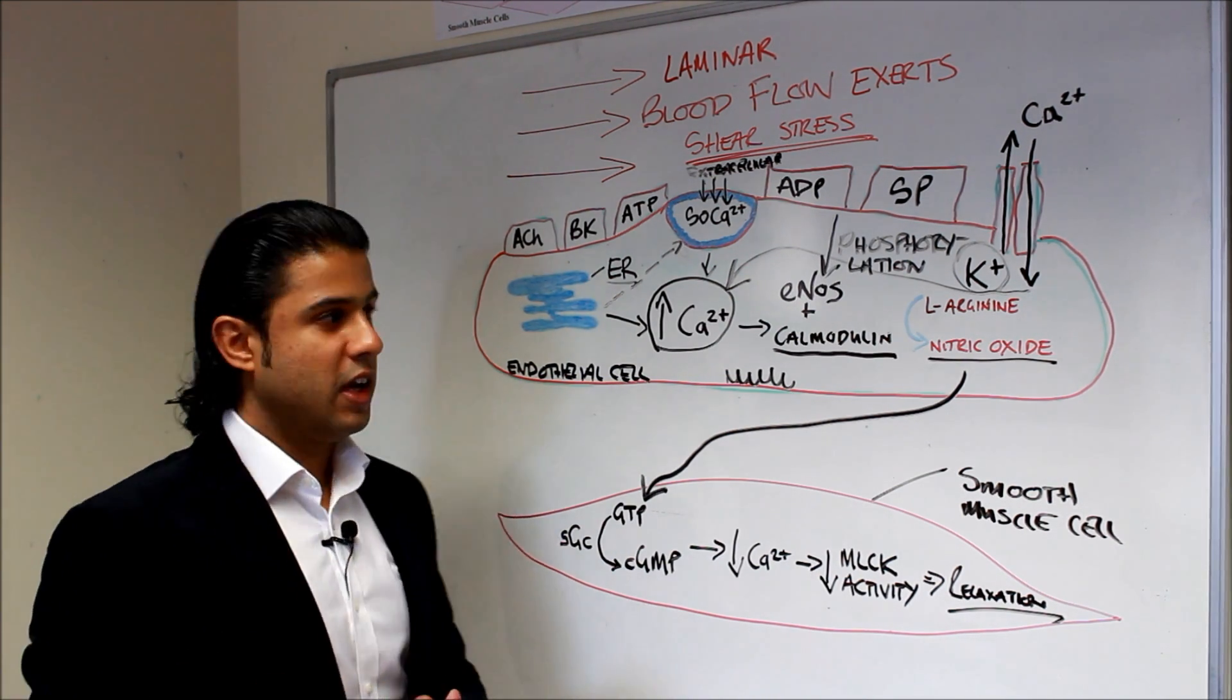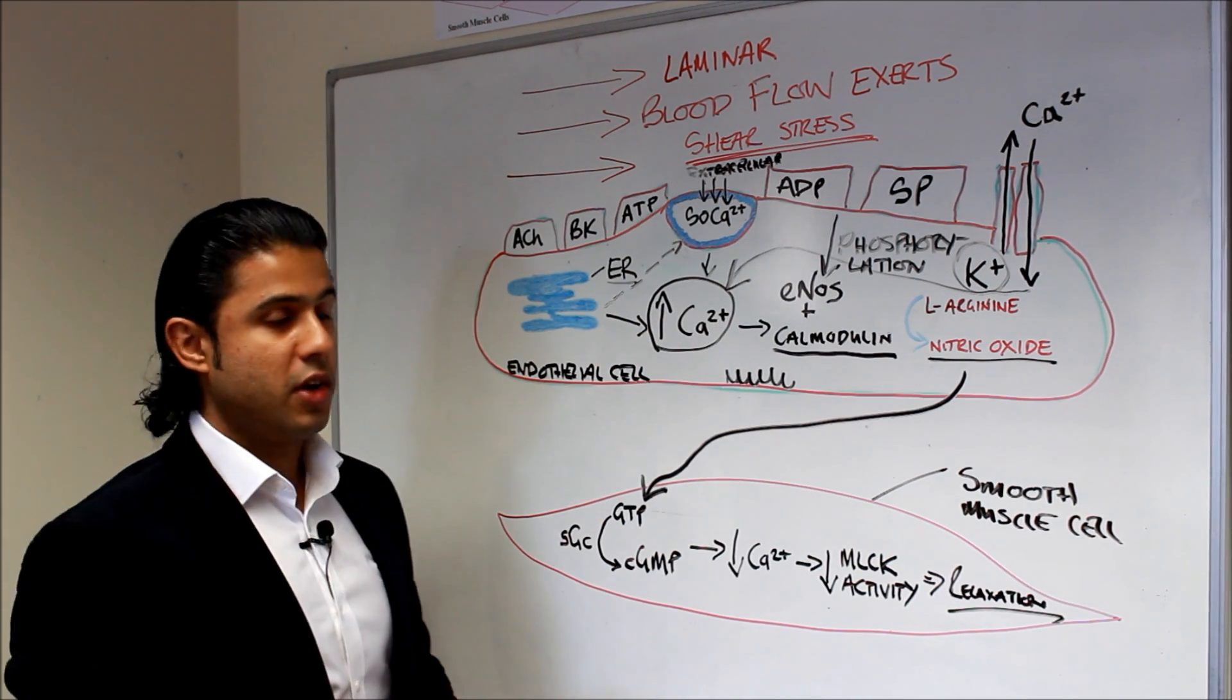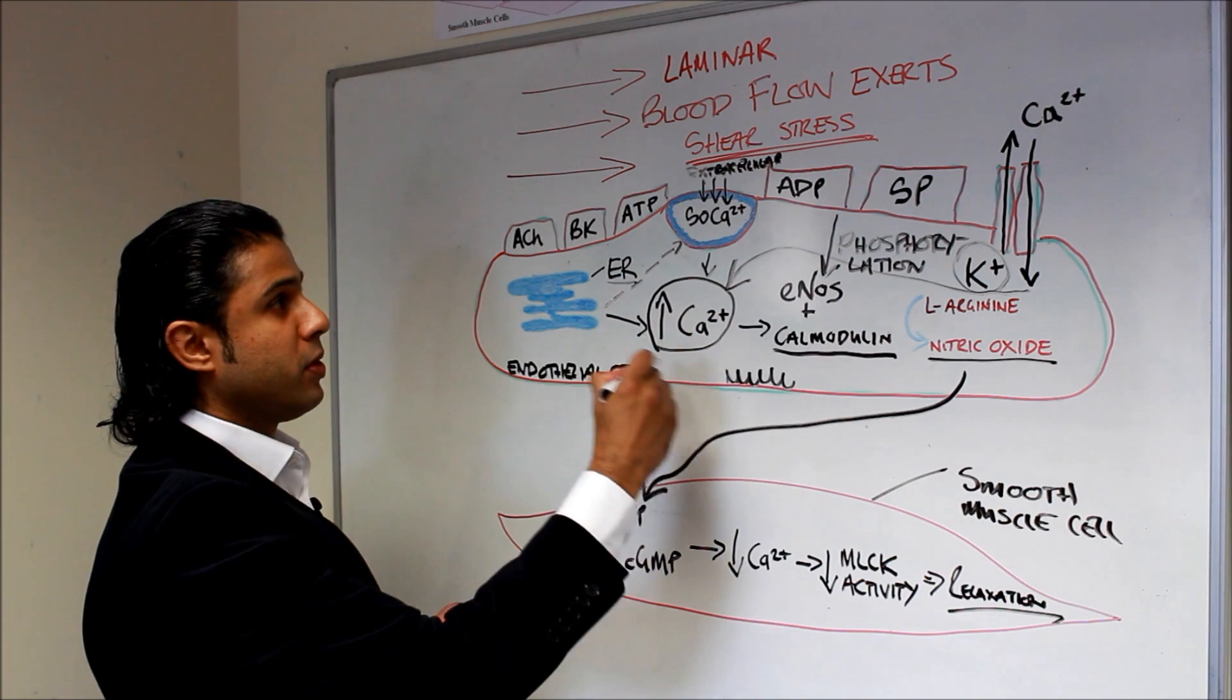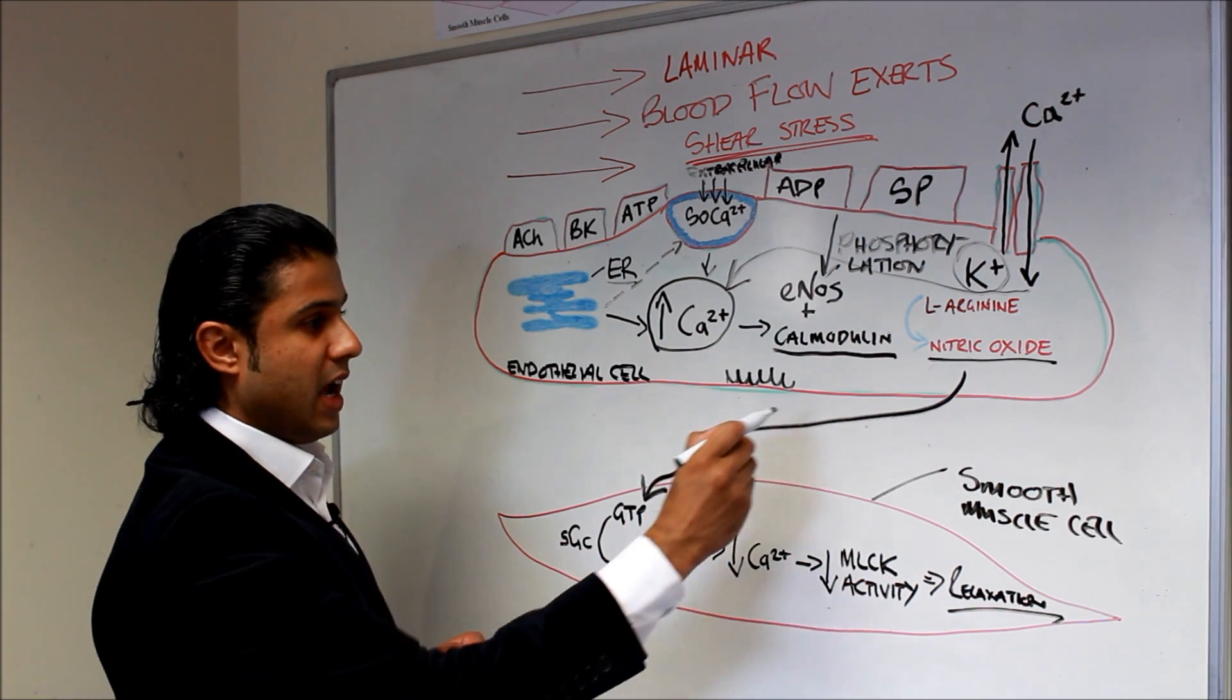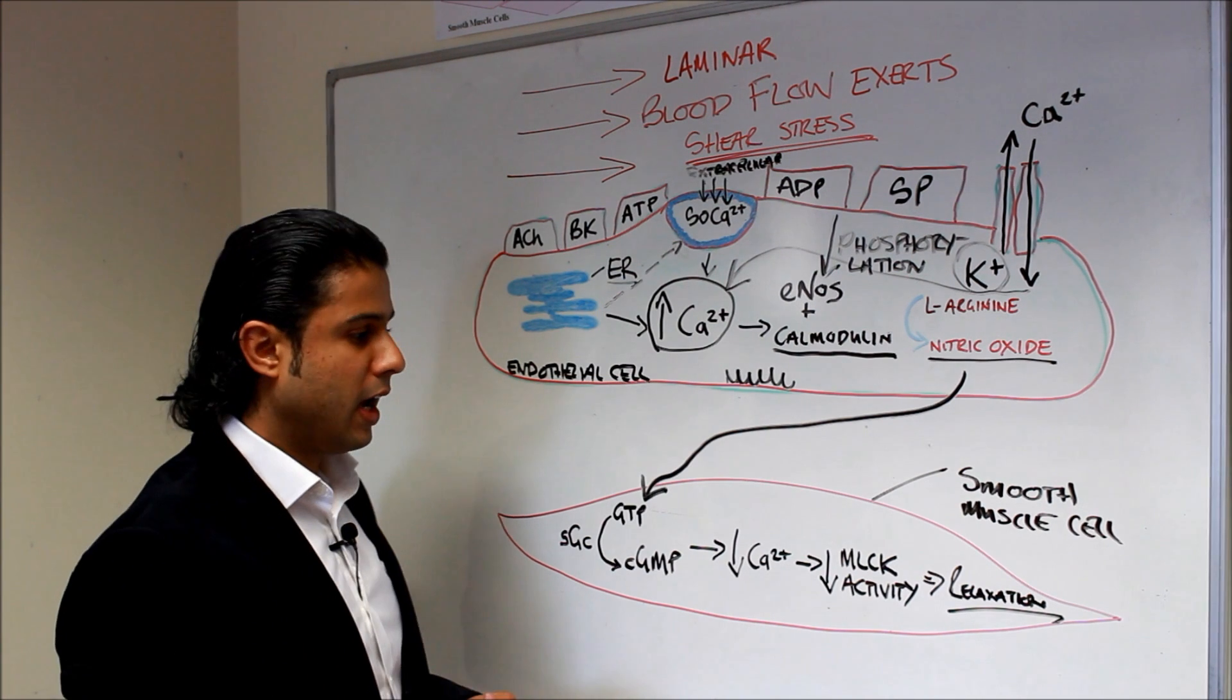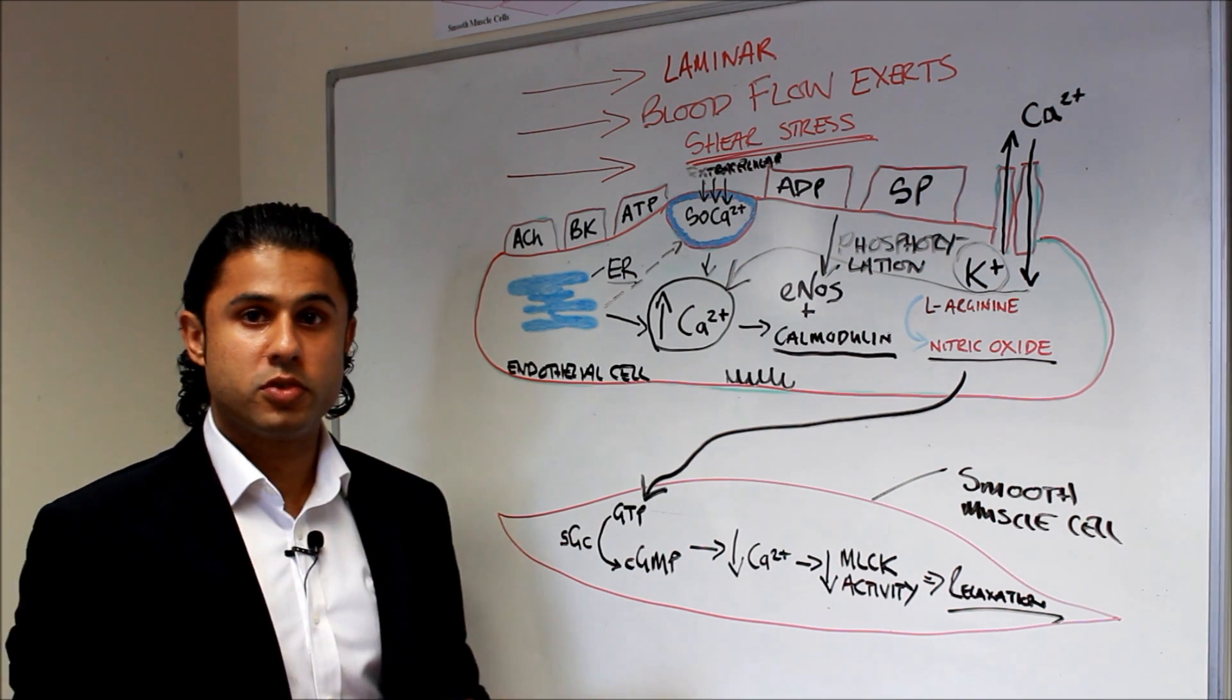So that my viewers is the way that you have vasodilation occurring via the production of nitric oxide, the activity of nitric oxide on the smooth muscle cell, and the relaxation of that smooth muscle cell as well.